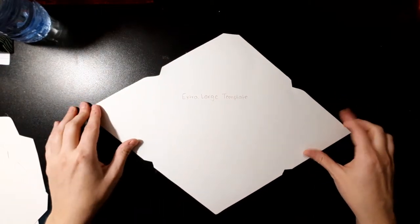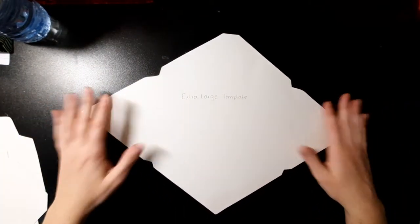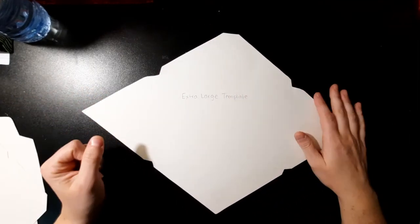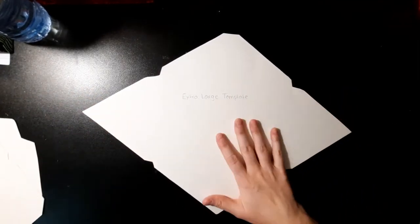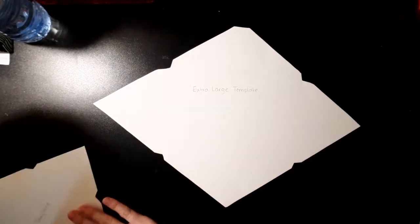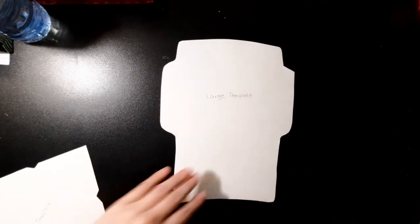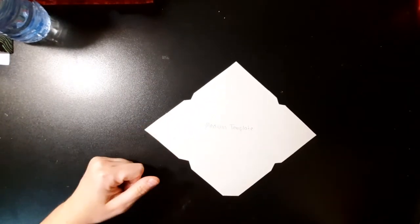So what I do is I take my template and I put my paper or images behind it, trace it, and then cut it out and start gluing. So I've got an extra large template, I have a large template that looks like this, and I also have a medium-sized template that looks like this. So I'm actually going to make some with you today.